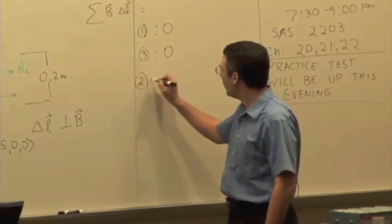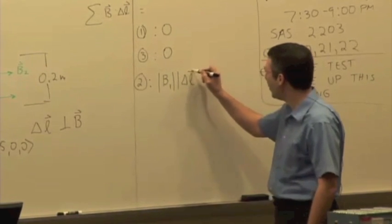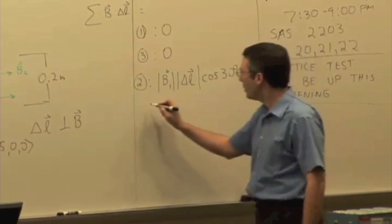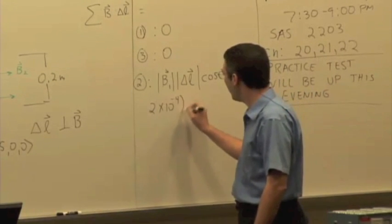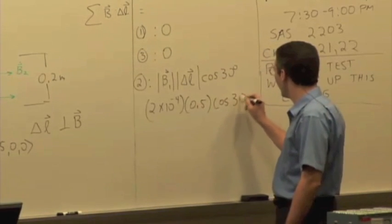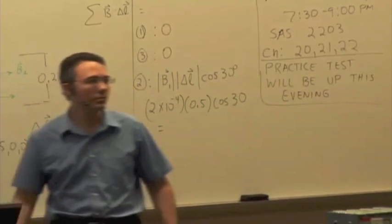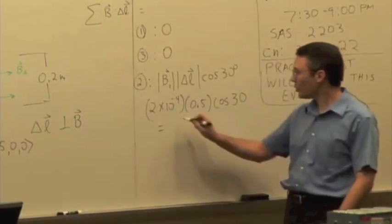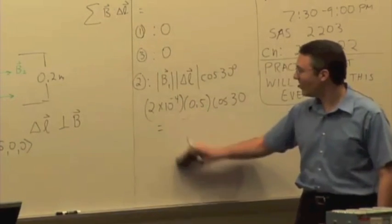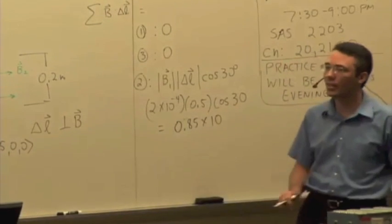So if you can just find the B dot DL at the top, you know it's got to be the same at the bottom because it's the same magnitude of field, same length, and same angle. So let's just figure that out. We have, on segment 2, the magnitude of B1 times the magnitude of delta L times the cosine of 30 degrees. So we get 2 times 10 to the minus 4 times 0.5 times cosine 30, which gives us 0.85 times 10 to the minus 4 Tesla meter.